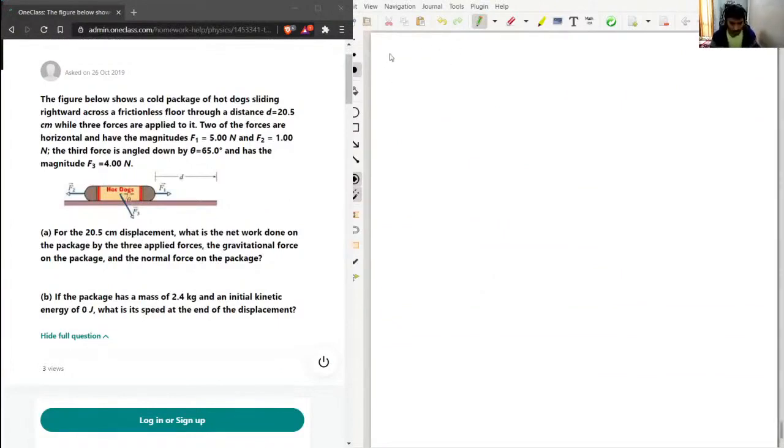This is question number five. This is a very lengthy question. The figure below shows a cold package of hot dogs sliding rightward across a frictionless floor through a distance d equal to 20.5 centimeters, so I'll write d equals 20.5 centimeters.